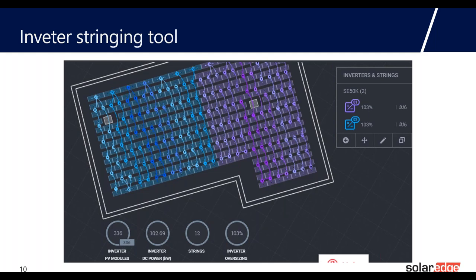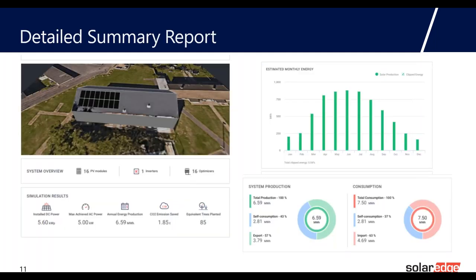We can go as large as needed — here's an example of a nice large commercial property with maintenance areas around the outside. Once we've built the project and placed the modules, we come into the stringing tool, which is very easy to use. This can be printed out and given to your installation team to show them exactly how to wire everything up with the selected power optimizers and inverters.